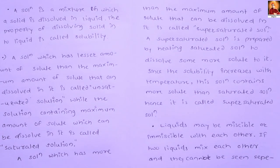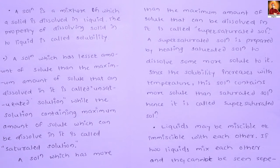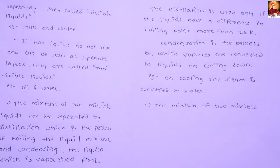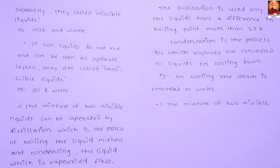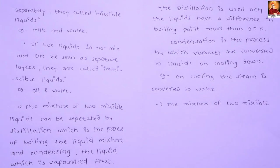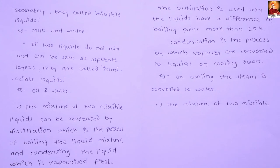Liquids may be miscible or immiscible with each other. When two liquids are completely mixed in a uniform layer, like milk and water, they are miscible. When two liquids form separate layers and do not mix, like oil and water, they are immiscible. Miscible liquids are separated by the distillation method.